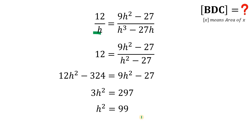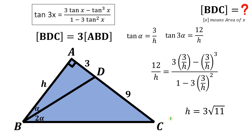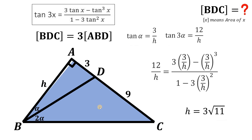Combining like terms, we have 3h squared equals 297. Dividing both sides by 3 gives h squared equals 99. Taking the square root: 99 is 9 times 11, so the square root of 99 is 3 times the square root of 11. Since h is a side length, we take only the positive value, so h equals 3 times the square root of 11. Using this, tangent of alpha is 3 over h, and tangent of 3 alpha is 12 over h.